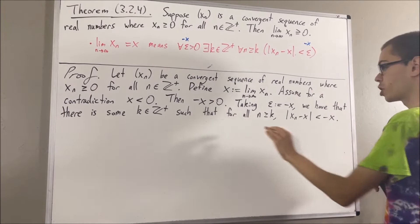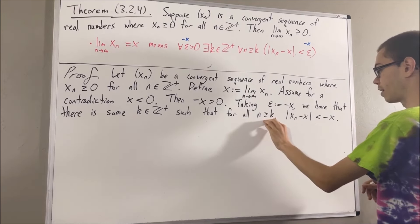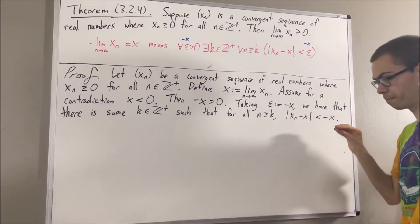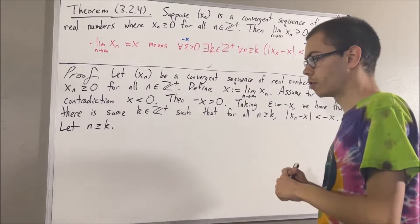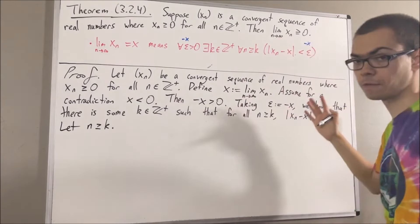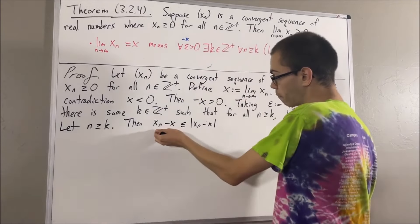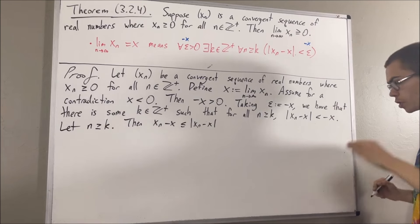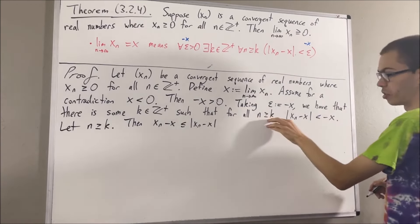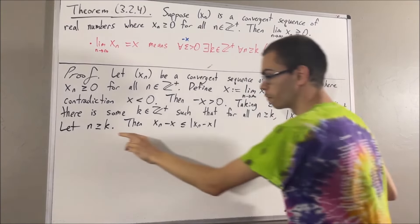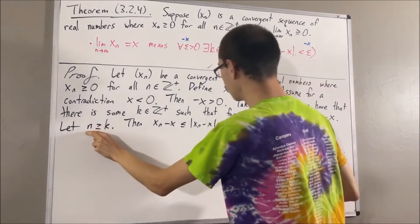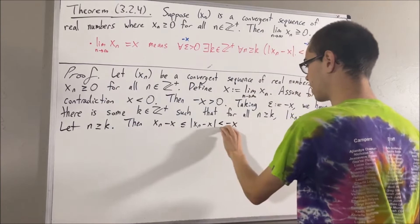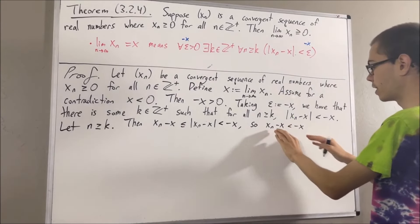And since this statement is true, we can show that this implies for all positive integers n greater than or equal to k, xn is less than zero. To see how that's the case, let's give ourselves an arbitrary positive integer greater than or equal to k — I'll call it n. Well then, xn minus x is less than or equal to the absolute value of xn minus x, because every number is less than or equal to its absolute value. But the absolute value of xn minus x is less than negative x, since the statement works for every positive integer greater than or equal to k, and in particular for n. So xn minus x is less than negative x, and adding x on both sides, we get that xn is less than zero.